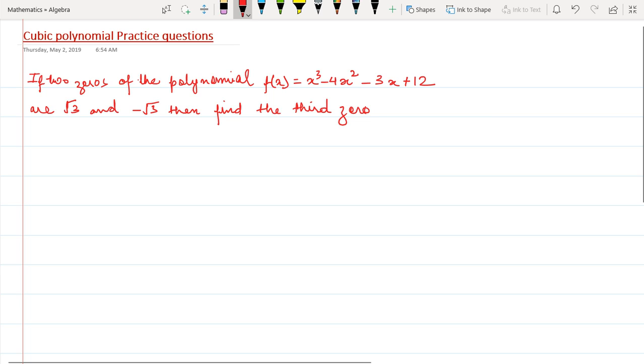Let's start solving this. It says if two zeros of the polynomial, which is a cubic polynomial, are √3 and -√3, then find the third zero. So let's say alpha, beta, and gamma are the three roots of the equation. Let's say alpha equals √3 and beta equals -√3. We have to find the value of gamma.